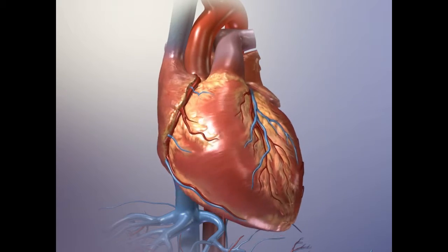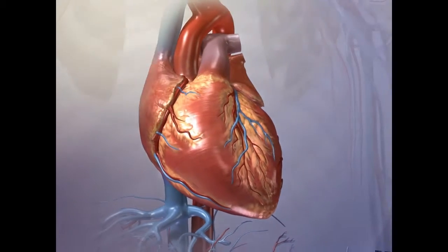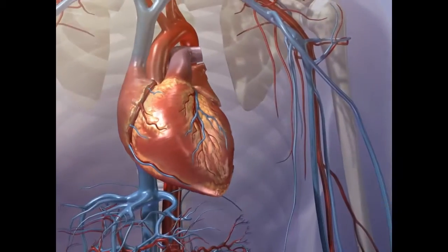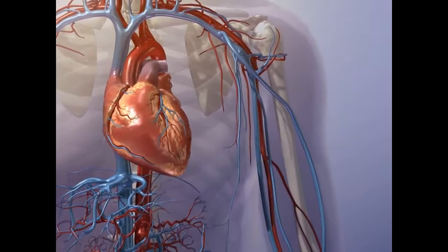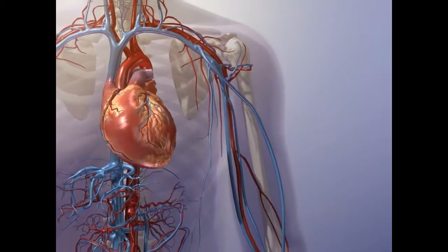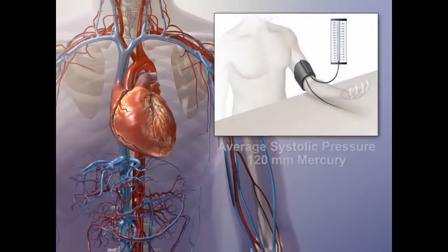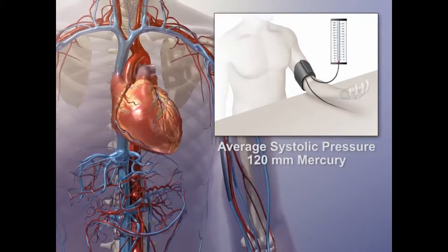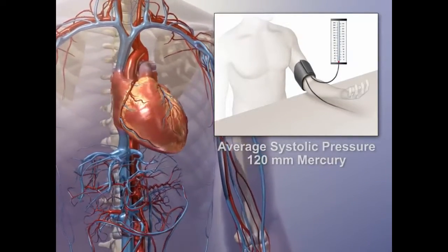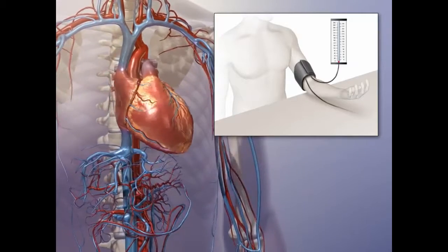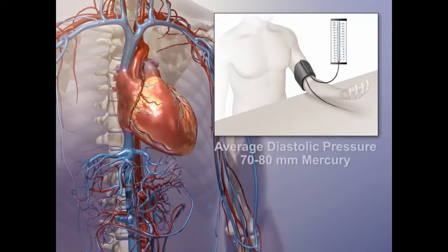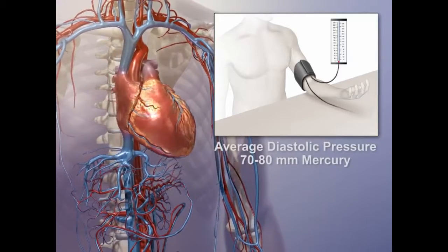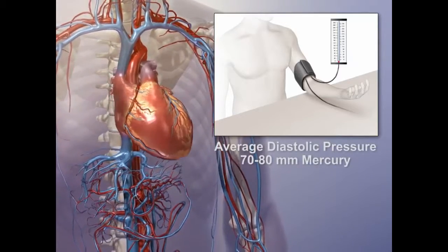Blood pressure is commonly recorded by measuring both systolic and diastolic pressures. The average systolic pressure is 120 mmHg. The average diastolic pressure is 70 to 80 mmHg.